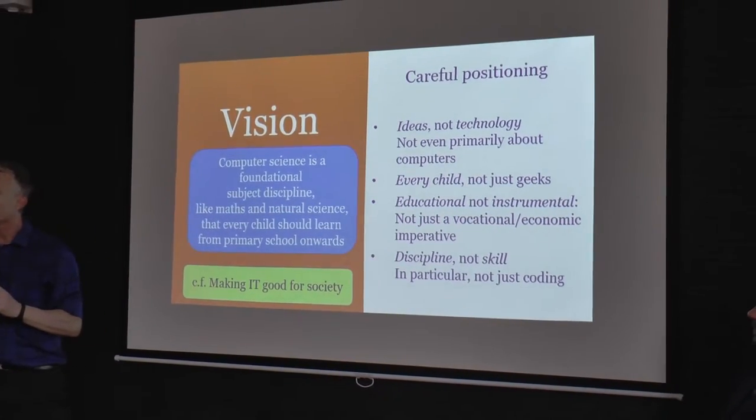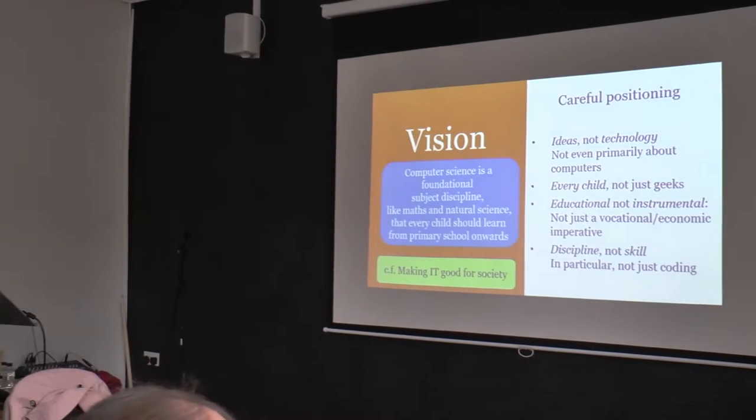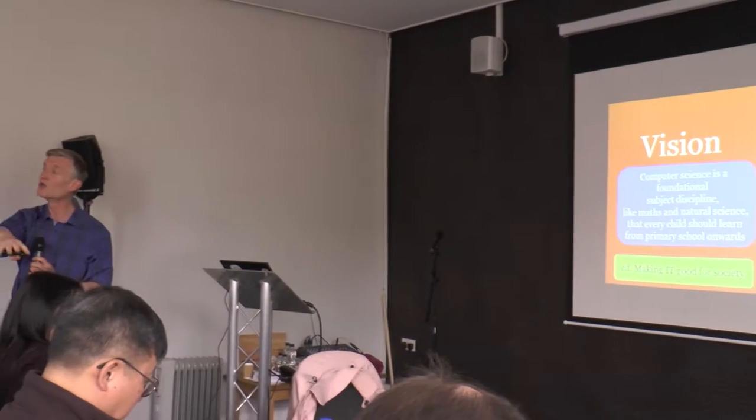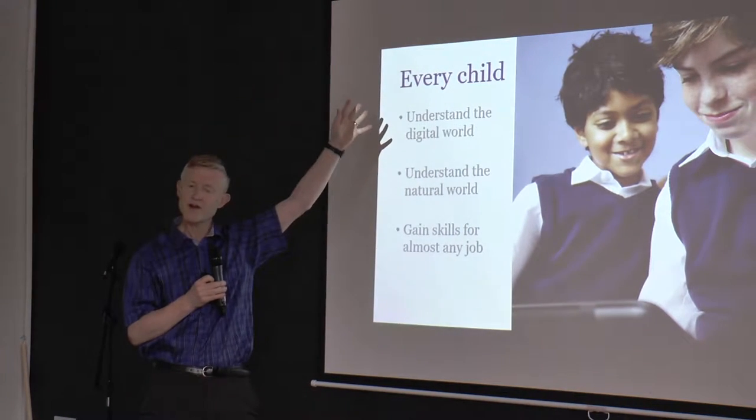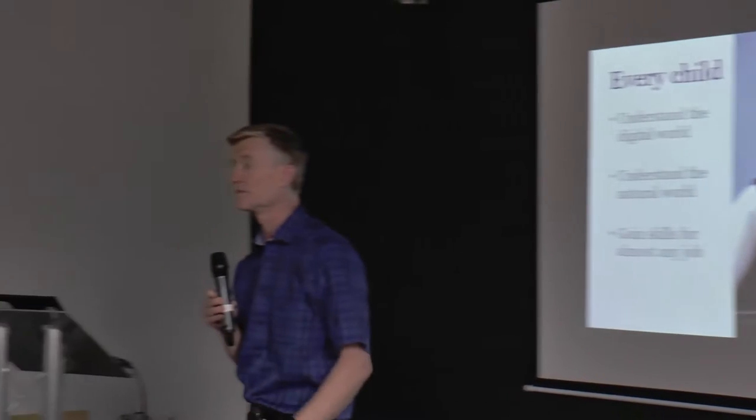Why every child? It's not enough to say 'because we need software engineers' — most children in primary school are not going to become software engineers; they're going to become hairdressers, plumbers, and brain surgeons. So why might every child learn something about computing? A helpful way to think about it is why we believe every child should learn some natural science. Why at primary school do we send children to the pond to collect tadpoles, or roll balls down inclines? Almost everybody, if they thought about it for 30 seconds, would say: it's because we want our children to understand something about the natural world that surrounds them, so that they can have agency in it.